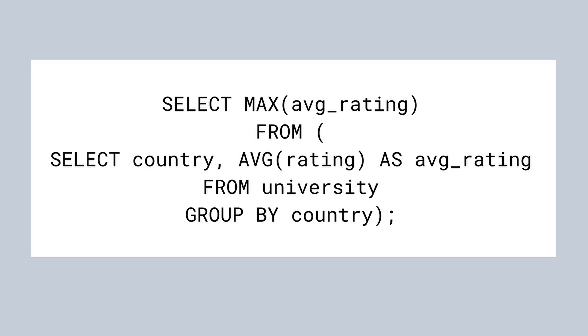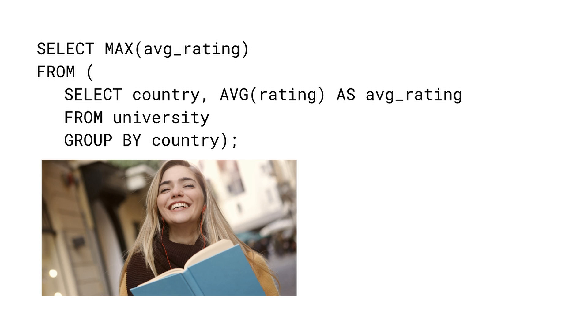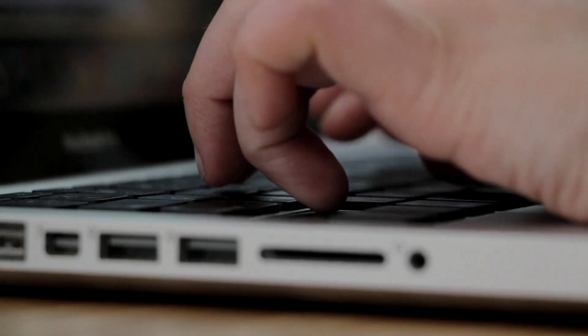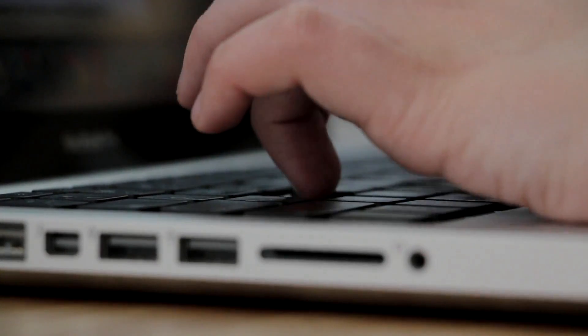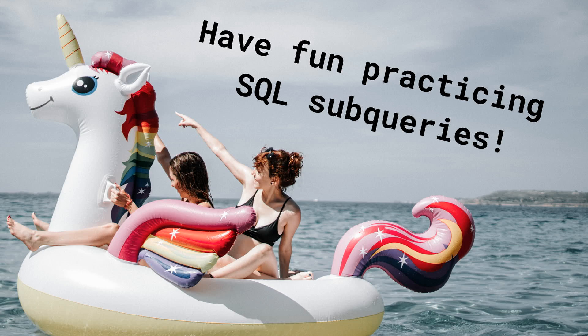Now in the third and final step we'll change the SELECT clause of the outer query. We'll use SELECT MAX(avg_rating), which is the column name we created in the subquery. We can now run the query and see the result, which is the maximum national average rating. We typically use a subquery in the FROM clause to calculate some intermediate results that we want to process later in the same query. Very often such subqueries involve aggregate functions and a GROUP BY clause. Of course other usages are also possible, and we encourage you to explore further possibilities on your own.